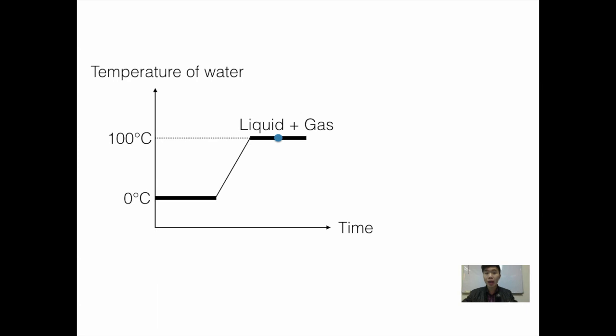So one of the tricky things that my students get confused about is sometimes they have a line that's going down and then it's a straight line. So don't forget there's still this thing called room temperature.